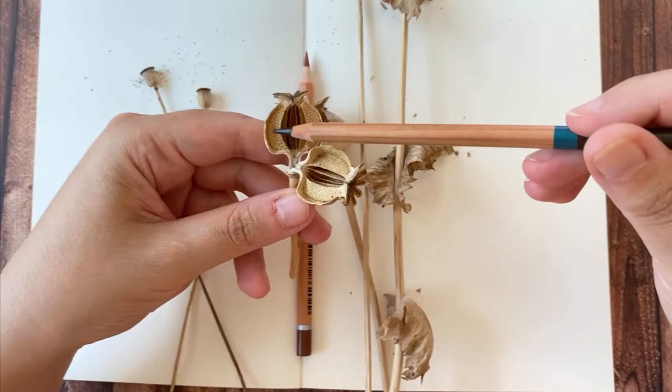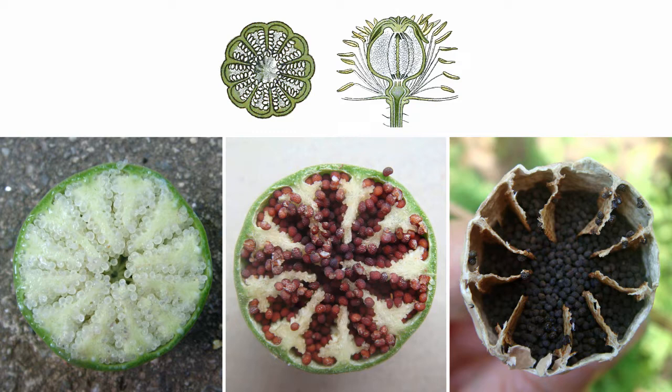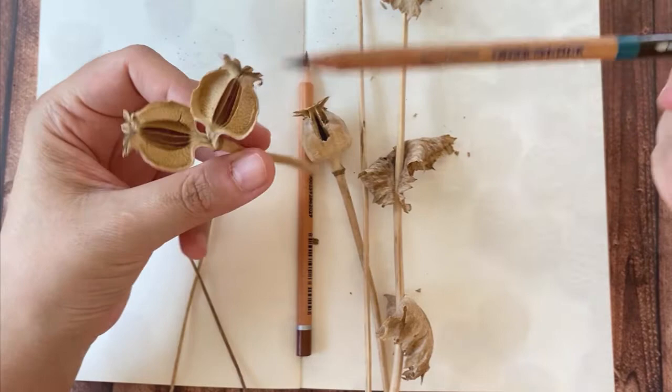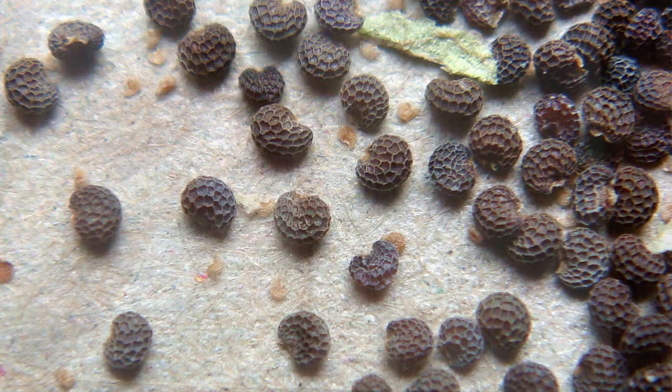The seeds are attached to the walls of these partitions. I took photos of three stages of fruit and seed development. When dried, the seeds become free and can escape the capsule through these valves. A closer look at the seeds reveals their kidney shape and a beautiful pattern on their surface.